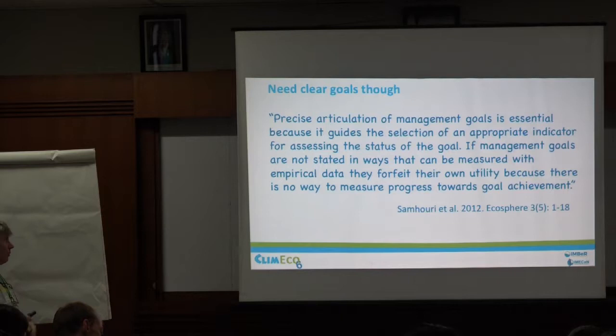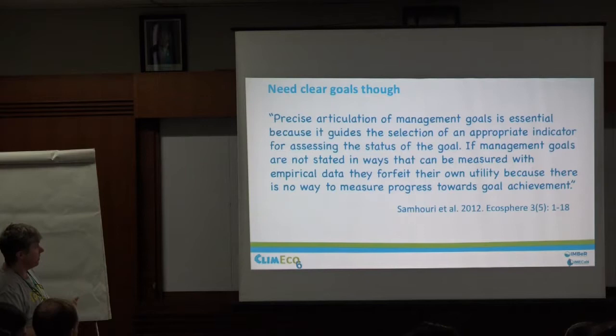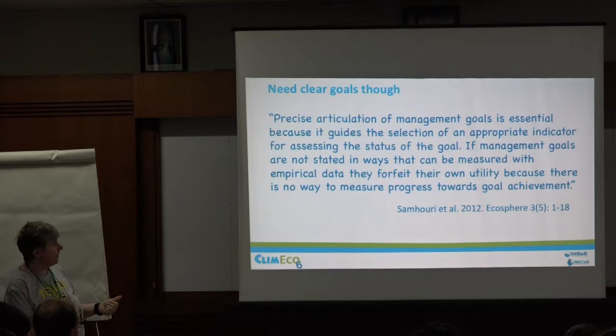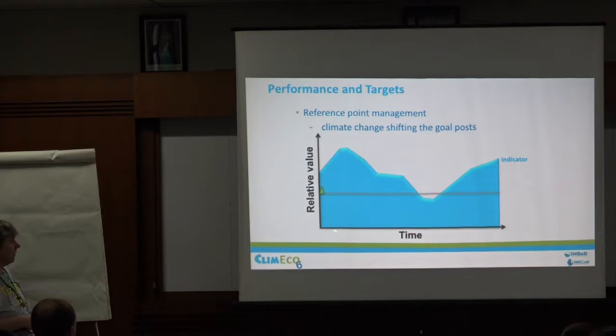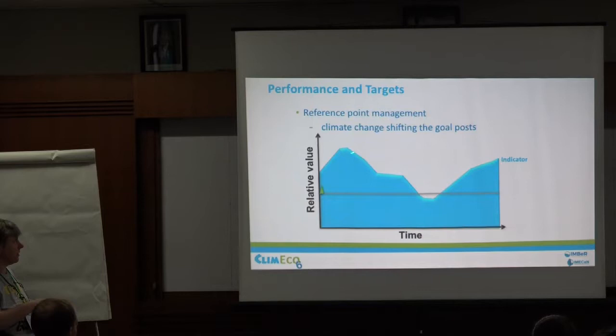Jamil Samhouri and a group of people in Seattle have done a lot of work in this area, particularly in the form of integrated ecosystem assessments along the coastline, bringing all those pressures together. The key part is that you've got to have a management goal defined so that you can see if the indicator is actually delivering information relevant to that goal. Getting that management goal defined is a really hard part of the process, but it's really important because you can't have information content without it. So you have a reference point — an indicator you can follow through time — and it's the difference between that indicator and the reference point that tells you your performance.